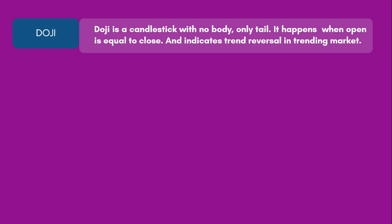The next pattern is Doji. A Doji is a candlestick without any body — it only has tails. Remember: Marubozu is a candlestick pattern with only a body and no tail; Doji is a candlestick with only tail and no body. A Doji looks like a plus sign — there are tails on both sides and a small line in between representing no body. Open and close are the same, which is why there is no body. The high is the highest point of the upper tail and the low is the lowest point of the lower tail.